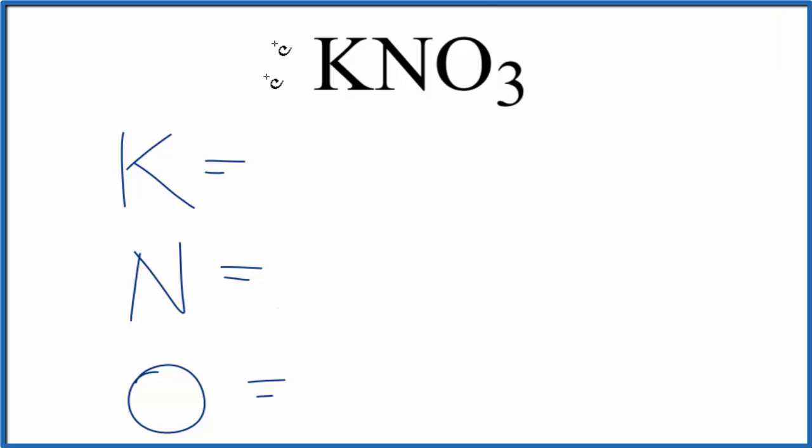These are the elements in KNO3. For potassium, there's nothing written after the K, so we assume the subscript to be one. Same for nitrogen, just a subscript of one if it's not written there. And then oxygen, the subscript is three, so we have three oxygen atoms.